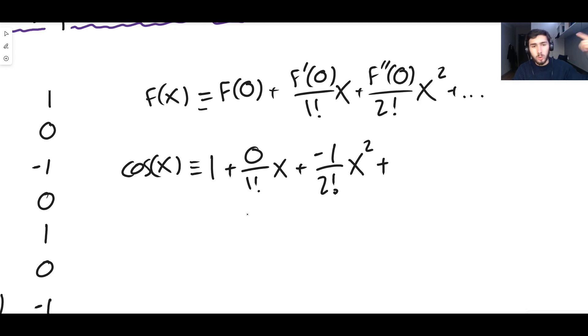Next term, we've got one, zero, minus one, next term is going to be a zero. So it's zero over three factorial x cubed. Next term is a positive one. So we're going to add positive one over four factorial times x to the four. And we keep doing this forever.